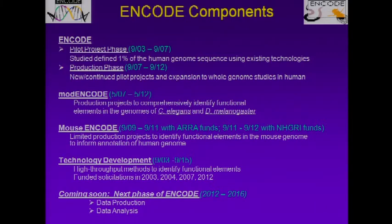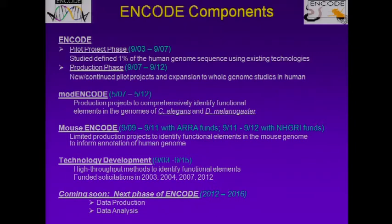In 2009, with help from economic stimulus funding, we initiated a smaller effort in Mouse ENCODE, where we did a limited study really trying to find functional elements in the mouse genome as a way to help understand the human genome sequence. Throughout this whole effort, we have been working on technology development — we really needed new high-throughput technologies to tackle this problem. We've had a series of initiatives in that area, and most recently funded a group of proposals this past year. A number of the technologies developed early on were then implemented in the production activities. We're looking forward to the next phase of ENCODE starting this fall.